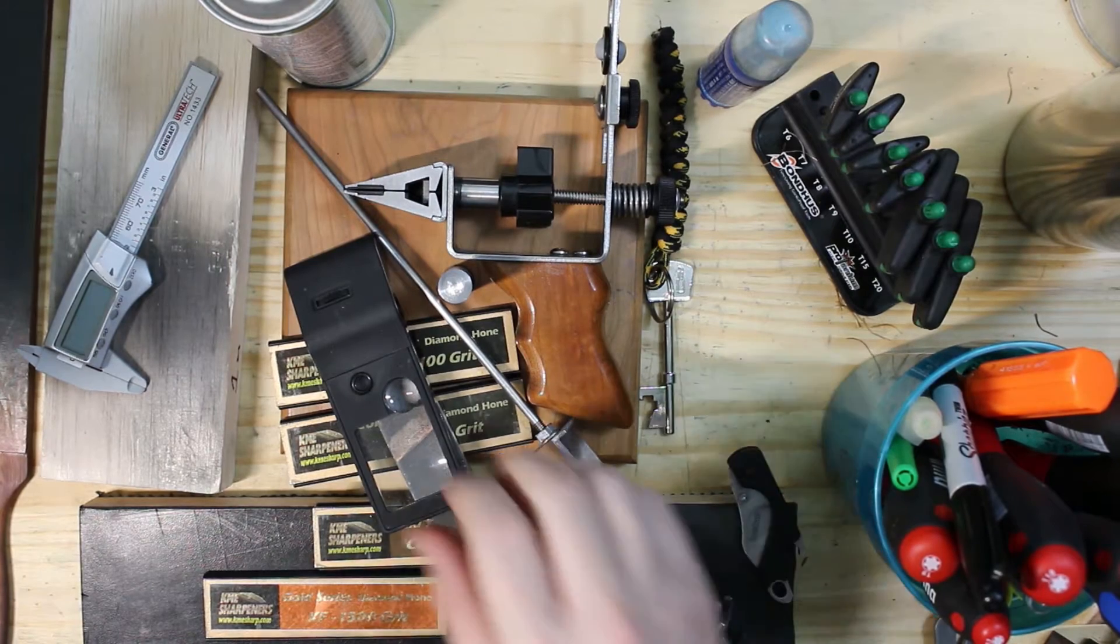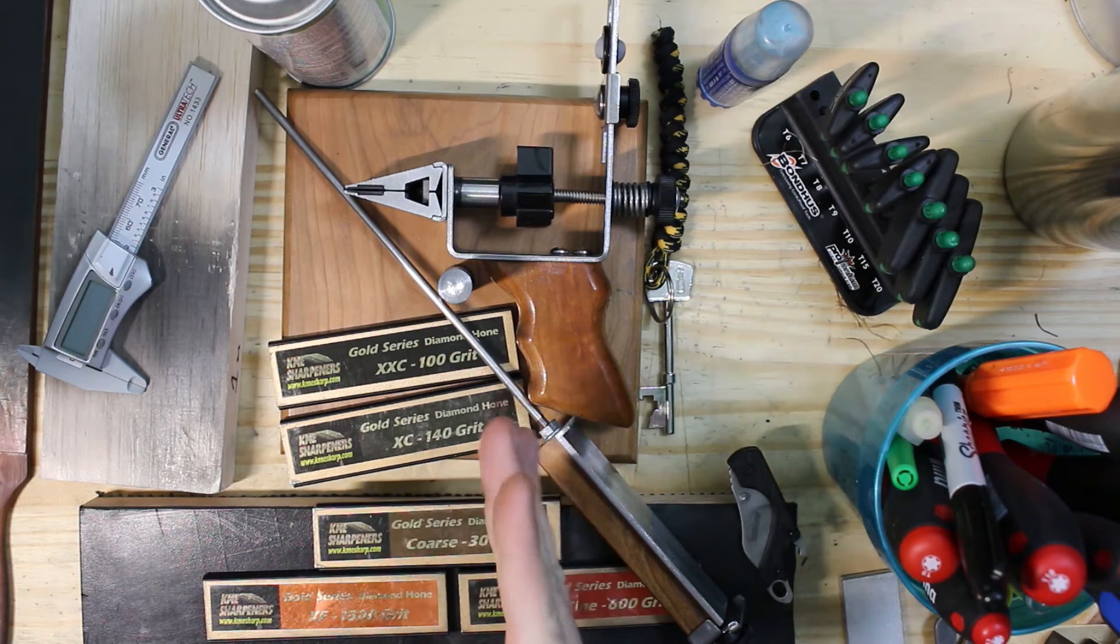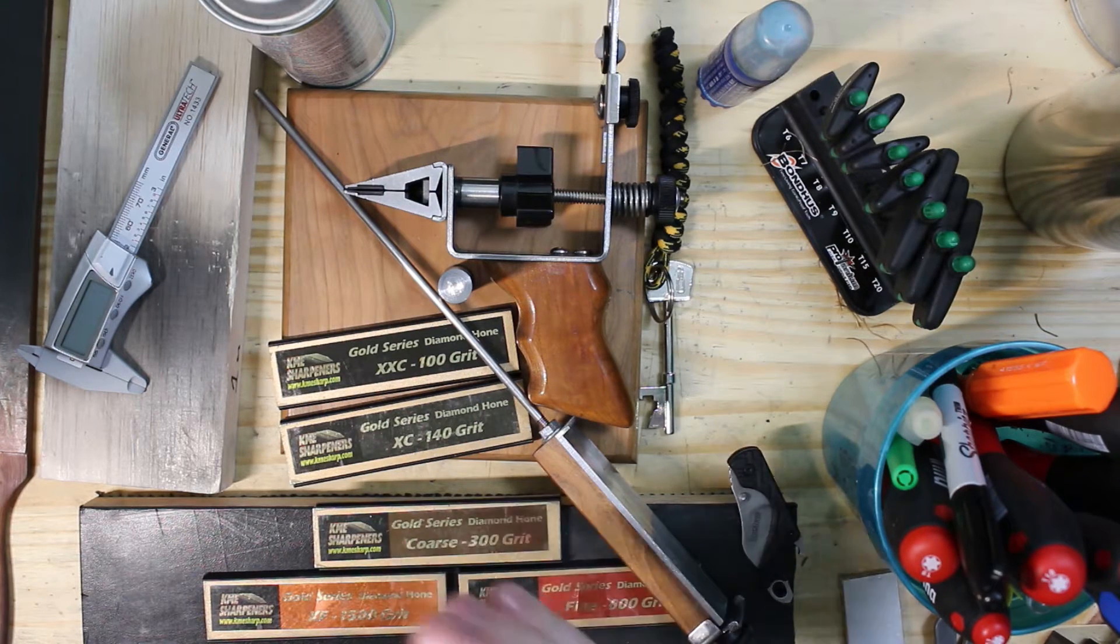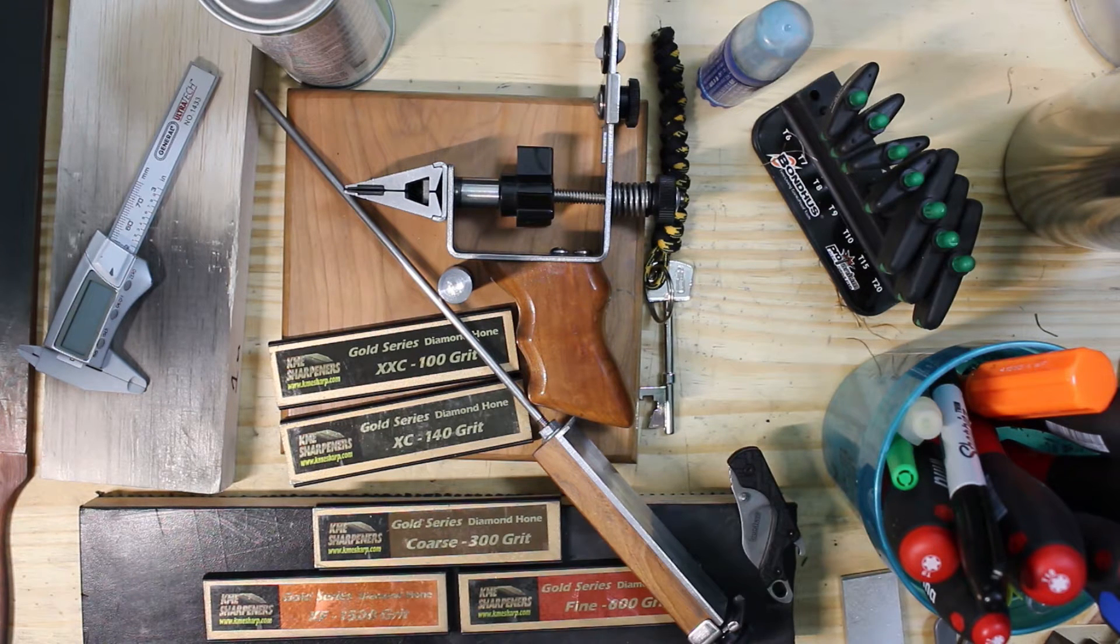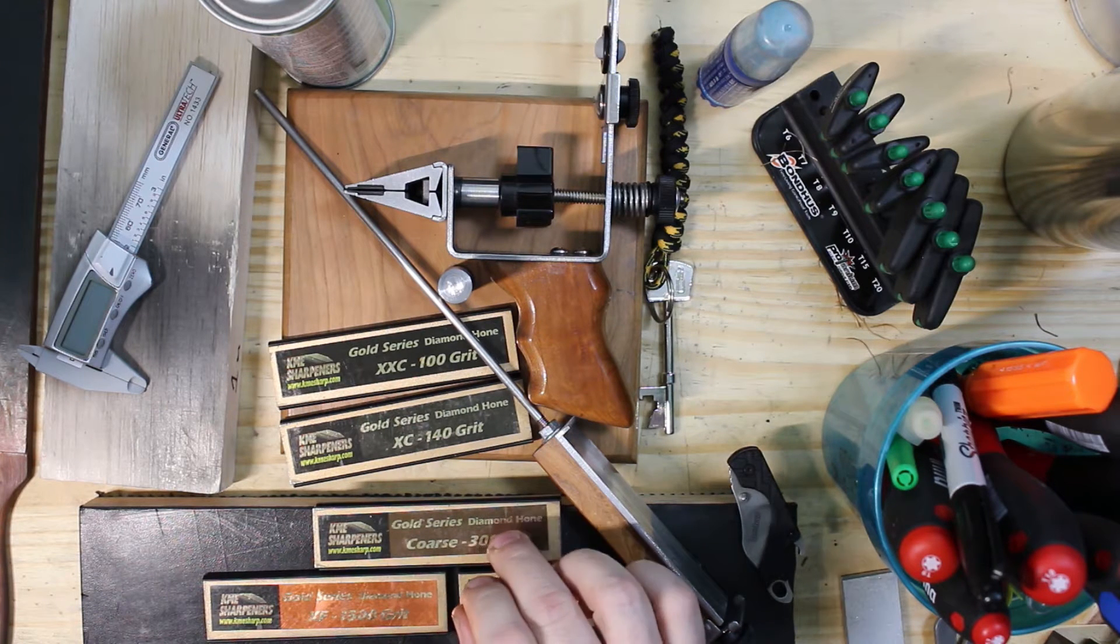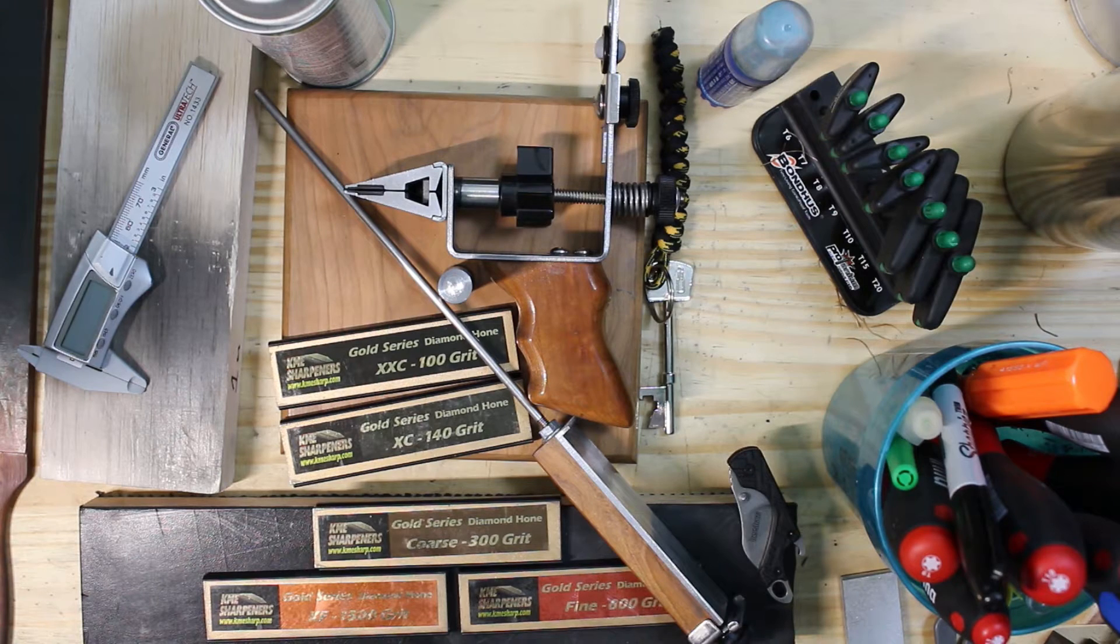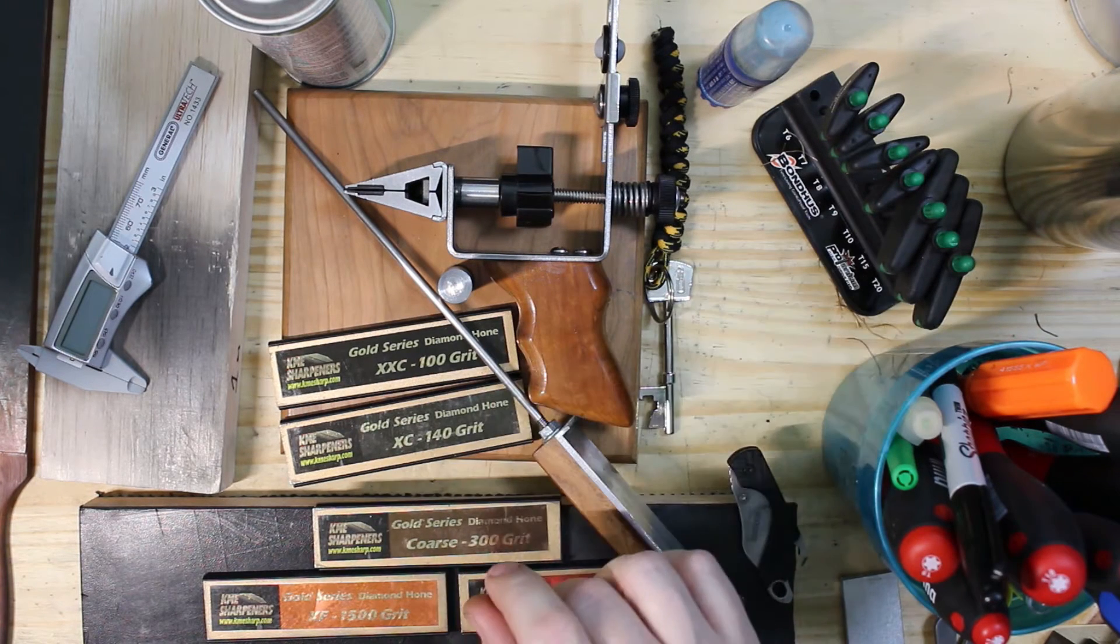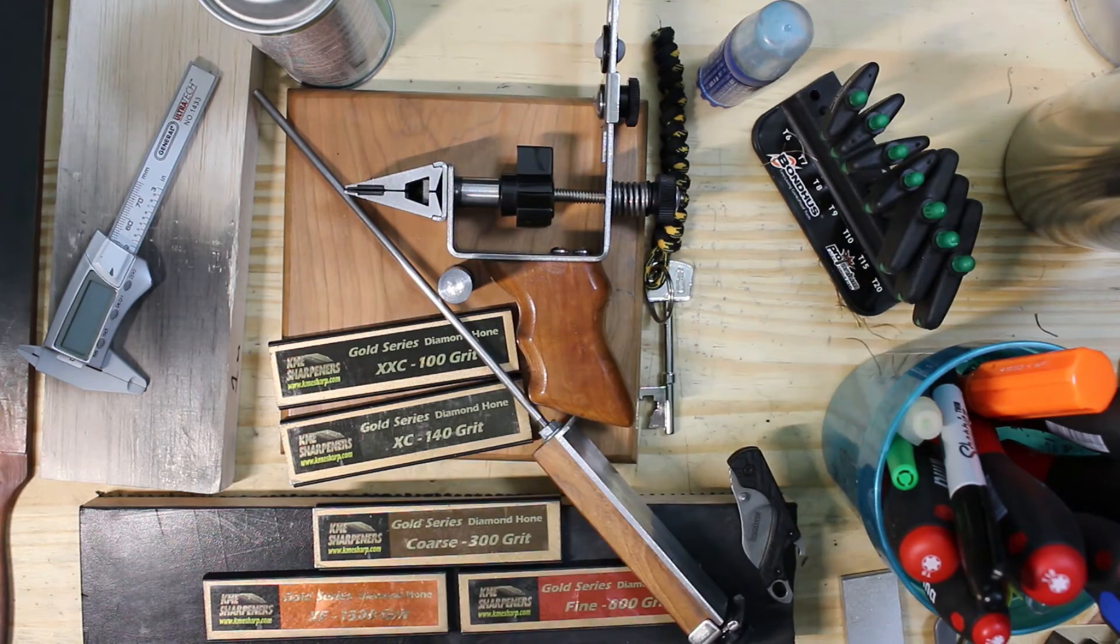From there, I go through the KME sharpening system from whatever grit is necessary. Some steels start at 300 and go up to 600 and 1500. Some require going down to 140, and if you need to reprofile something, you may have to go all the way to 100 grit. You can watch some of Knife Crazy Matt's videos on the KME sharpener to see how it works.